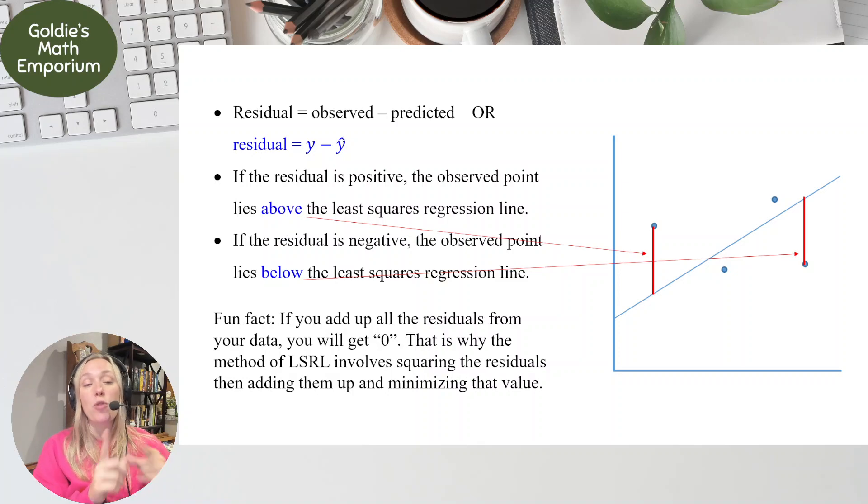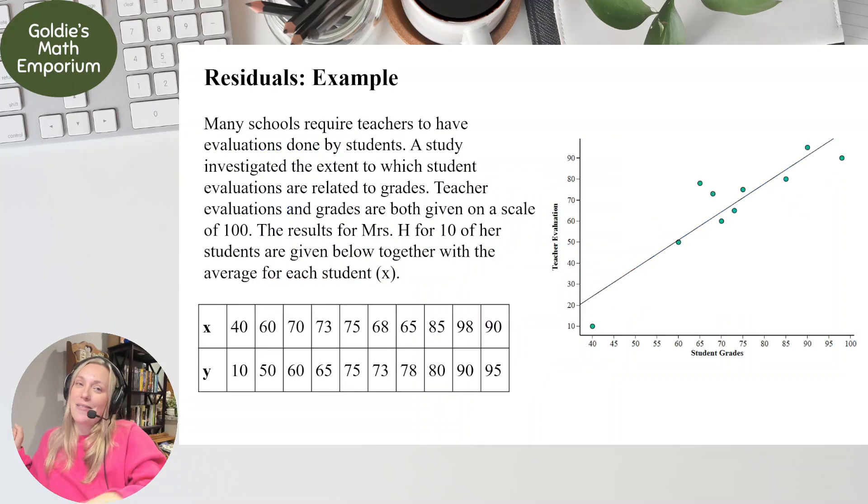Remember, if you actually add up all the residuals, you do get zero. Which is why the method of least squares regression involves squaring the residuals and then adding them all up to minimize that value. So that's just a fun fact. I just like fun facts, throwing them out there. Adding up all the residuals in a data set is going to give you zero. Love it, right?